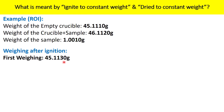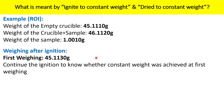Now, if your test procedure says ignite until constant weight, you cannot stop the testing here. You need to further understand whether constant weight was really achieved at the first weighing. Unless and until you ignite a second time, take the weight, and measure the difference, you cannot know whether constant weight was achieved or not. So go for the second ignition — ignite for one hour, cool in the desiccator, and weigh again. Let us assume the second weighing is 45.1123 gram.